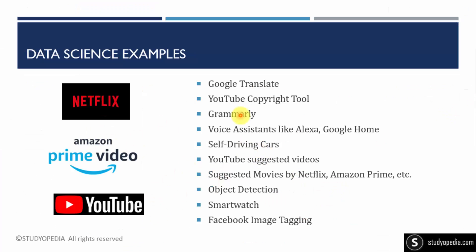Other examples include Grammarly, voice assistants like Alexa, Google Home, and Siri, as well as Facebook image tagging. When you upload an image on Facebook, it detects the humans in it and shows whether you can tag them if they're in your friends list — that's object detection. There are also currency finder apps and object detection apps for blind and partially blind users, so they can detect which currency note or device is visible through voice control.